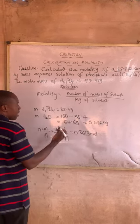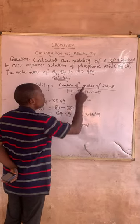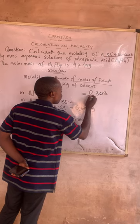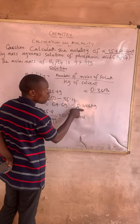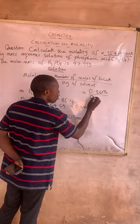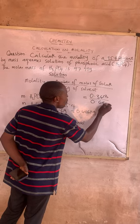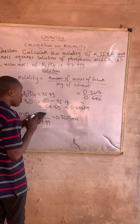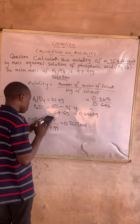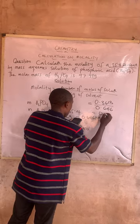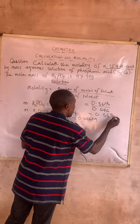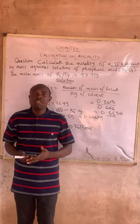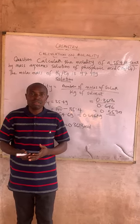Now I can solve the question. The number of moles is 0.3613 over the kilogram of solvent, which is 0.646. That gives 0.559 molal. You can see how easy the question is. Thank you for watching.